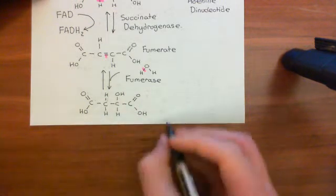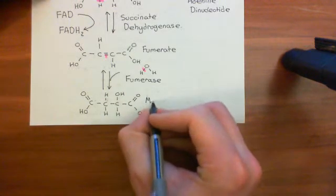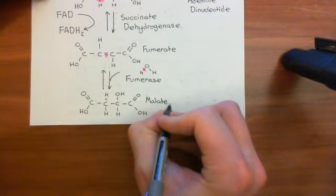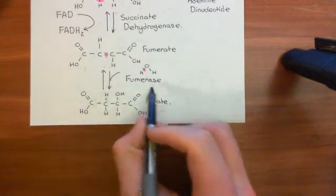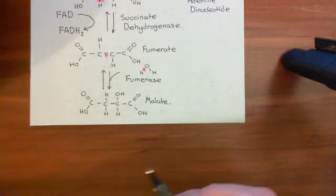And then we have this carboxylic acid group over here. So, this molecule that we now have here is known as malate, or malic acid, if you like. And again, this reaction catalyzed by fumarase here is a reversible reaction.